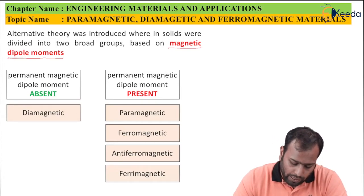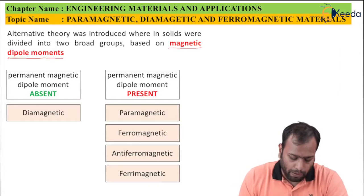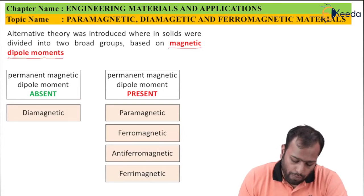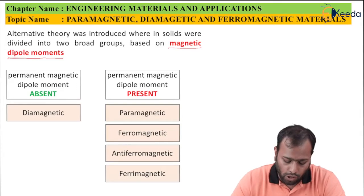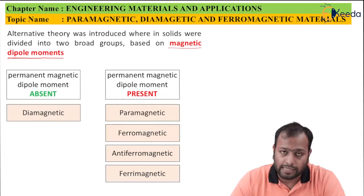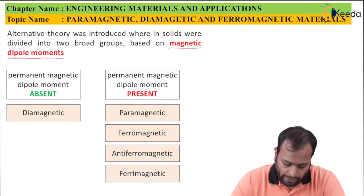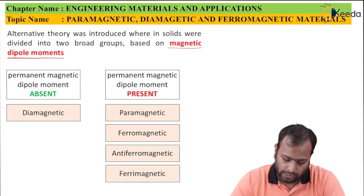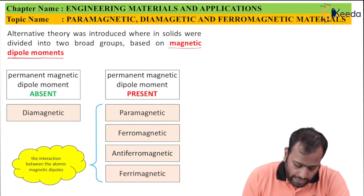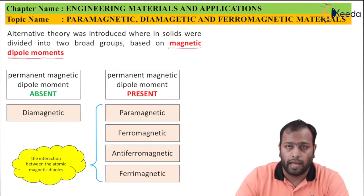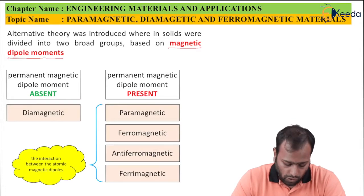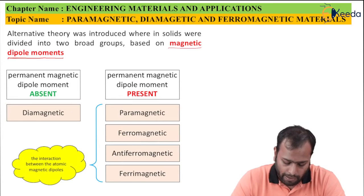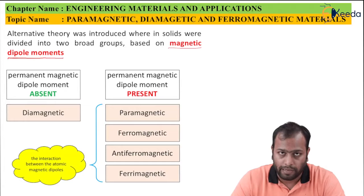A point would come: if permanent magnetic dipole moment is absent or present, it is easy to determine diamagnetic. But on what parameter are materials classified as paramagnetic, ferromagnetic, antiferromagnetic, and ferrimagnetic? This classification is done on the basis of interaction between the atomic magnetic dipoles. We will look in detail at how this interaction works and how materials are classified accordingly.